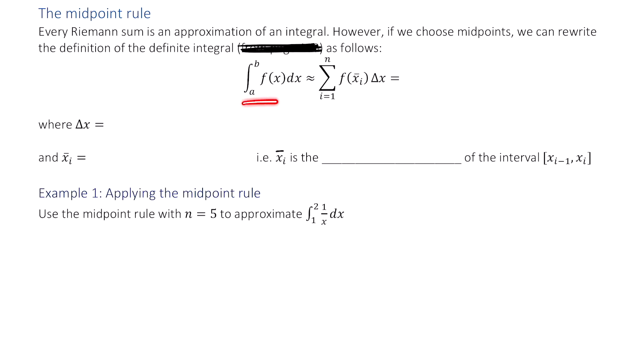The integral from a to b of f(x) dx is approximately the sum of the rectangles, where this is f evaluated at the midpoint, and delta x is the width of each rectangle. That's equal to delta x times f(x₁ bar) plus f(x₂ bar), plus all the way to f(xₙ bar).